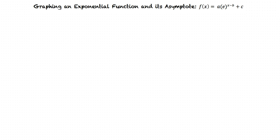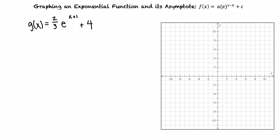How do we know which points to plot? Let's look at this in the context of an example problem. Let's graph the function g(x) equals two-thirds times e raised to the x plus one plus four. We'll need to plot two points (x, g(x)).